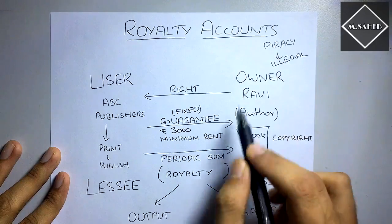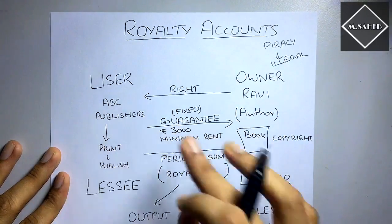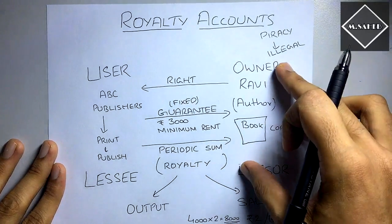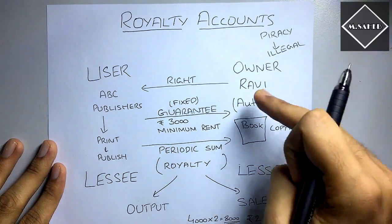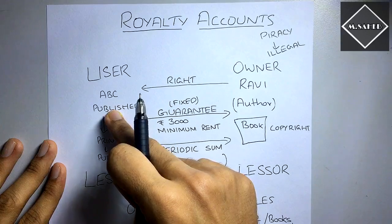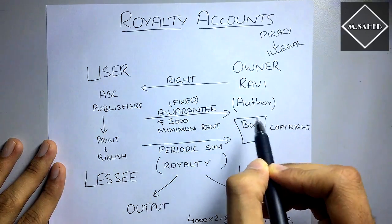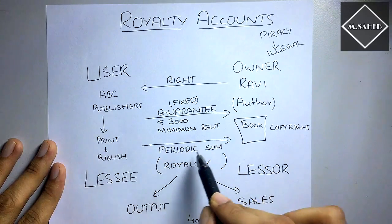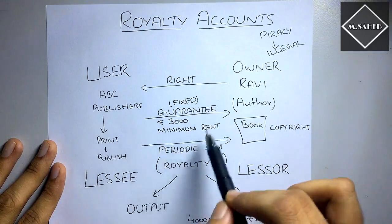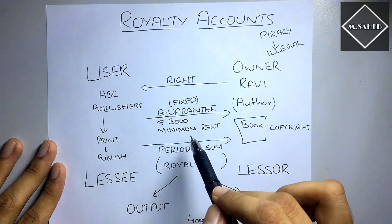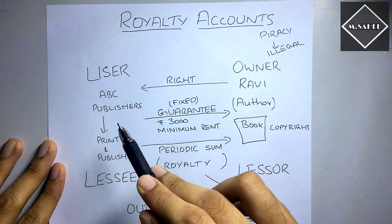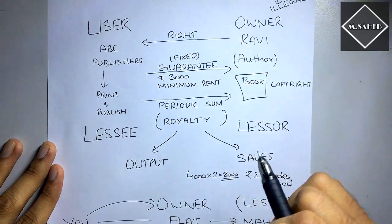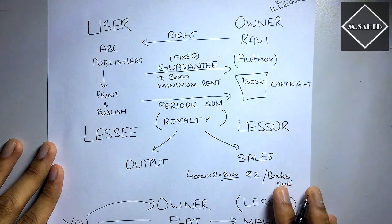This fixed minimum is so that Ravi can be safeguarded, because his job is finished — they have to handle the sales and publishing. So this is the concept of royalty accounts: one person who has the right to an asset or property will give that right to another person or company so they can do business with it. The lessor, the owner, gives the right to the user, the lessee, who does business and pays a periodic sum to the owner, along with a minimum rent to safeguard the lessor.